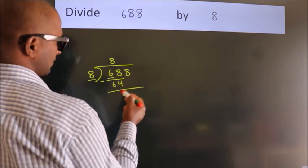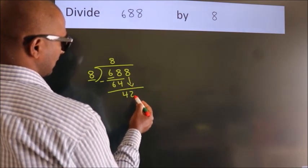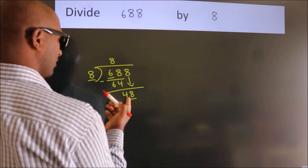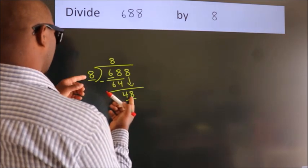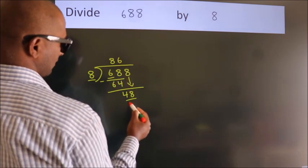After this, bring down the beside number. So 8 down, making 48. When do we get 48 in the 8 table? 8 times 6 equals 48.